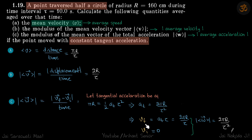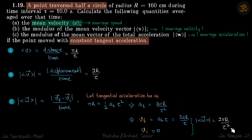Knowing a_t, we find the final velocity: v_f = a_t·τ (since initial velocity is zero), which gives 2πr/τ. Therefore, the magnitude of average acceleration is (v_f − v_i)/τ = (2πr/τ)/τ = 2πr/τ².